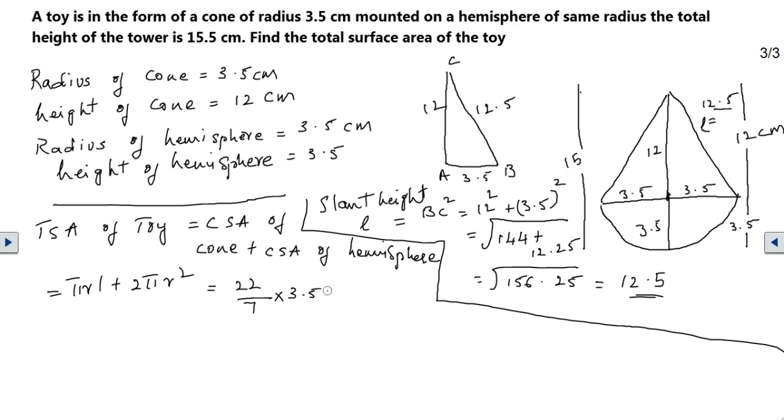Pi is 22 by 7, r is 3.5, and l is 12.5. For the hemisphere, it's 2 times 22 by 7 times 3.5 times 3.5. Here 7 cancels with 3.5, giving 0.5 times.